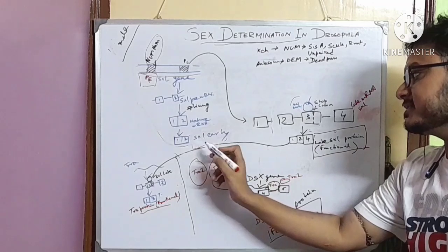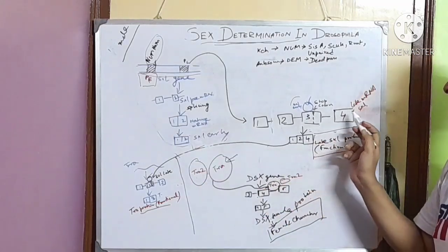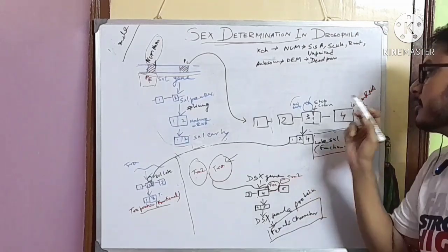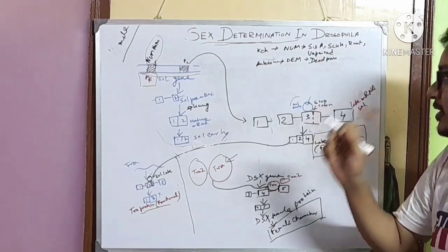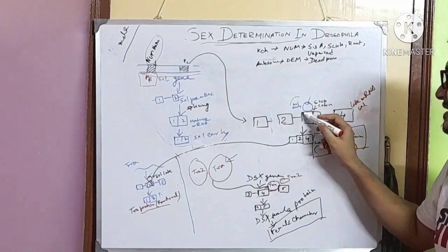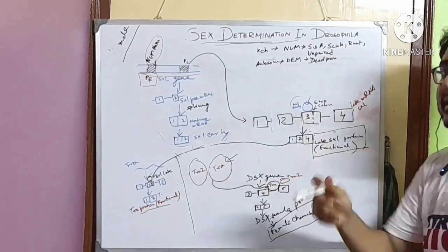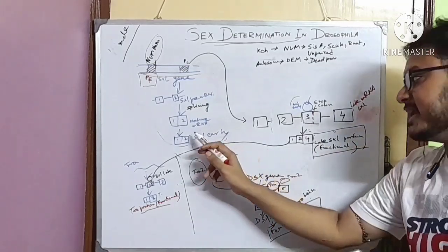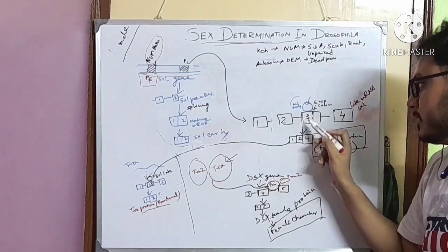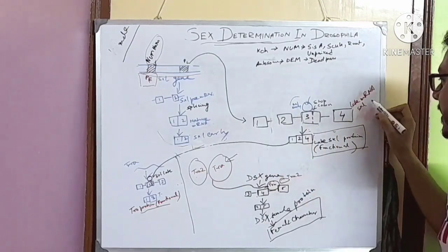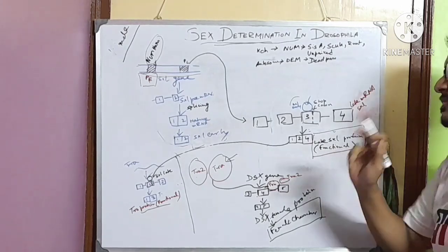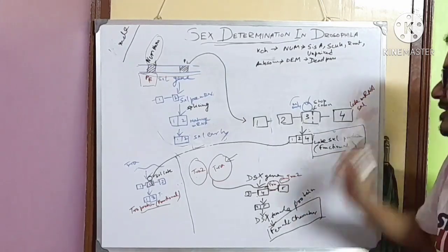Why? To produce the functional late SXL protein, the third exon has to be excised from the mRNA. So, as the SXL early protein is not present, this portion remains associated with the mRNA. And thus, this functional SXL protein is not produced. This protein is degraded.